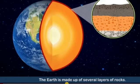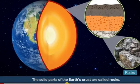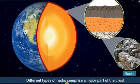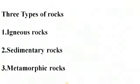The Earth is made up of several layers of rocks. The solid part of Earth's crust is called rocks. Different types of rocks comprise a major part of the crust. There are three layers of rocks: igneous rocks, sedimentary rocks, and metamorphic rocks.